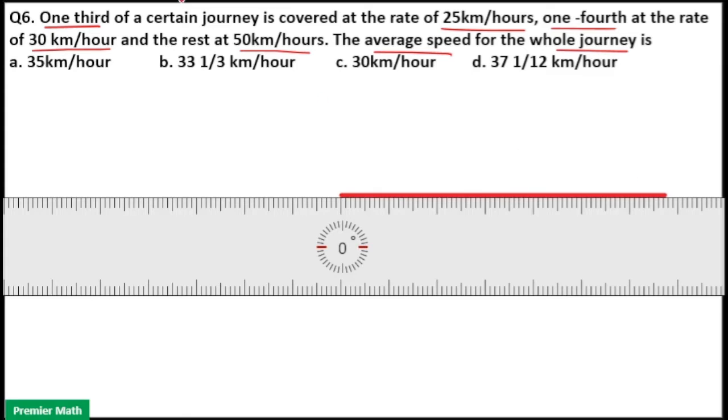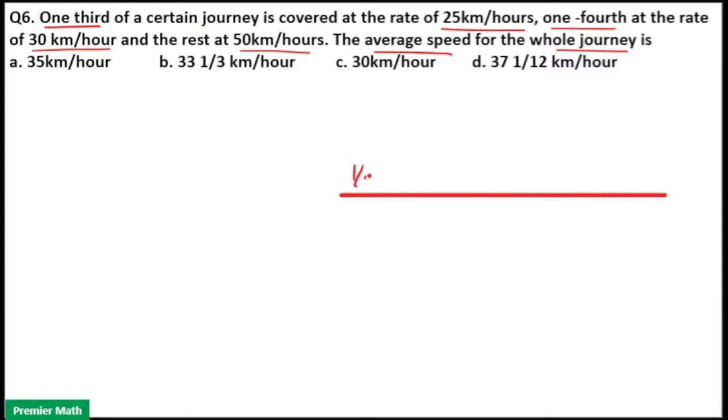Here, one-third of a certain distance covered with a speed of 25 km per hour, one-fourth of that distance covered with a speed of 30 km per hour and the remaining distance covered with a speed of 50 km per hour.